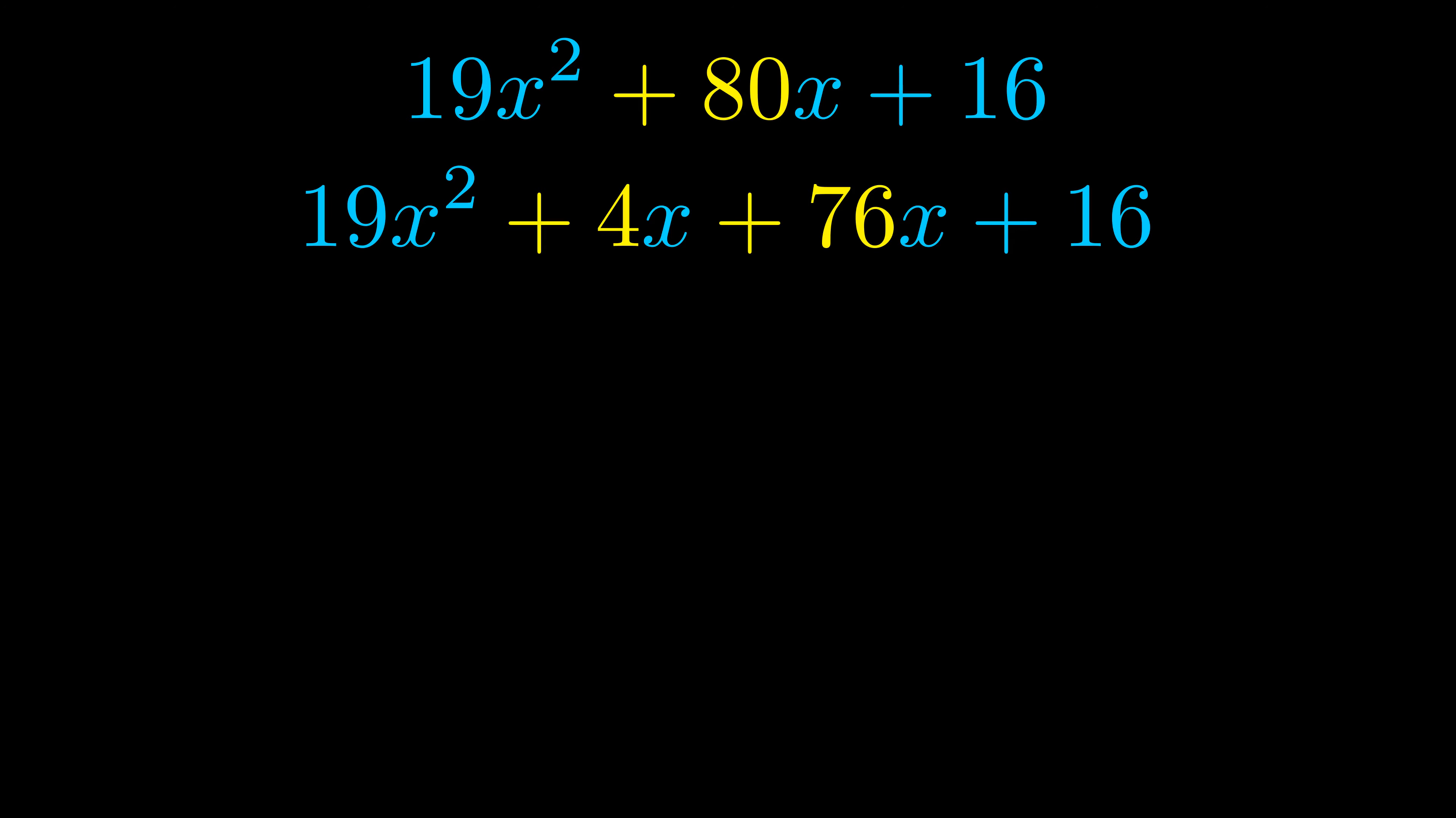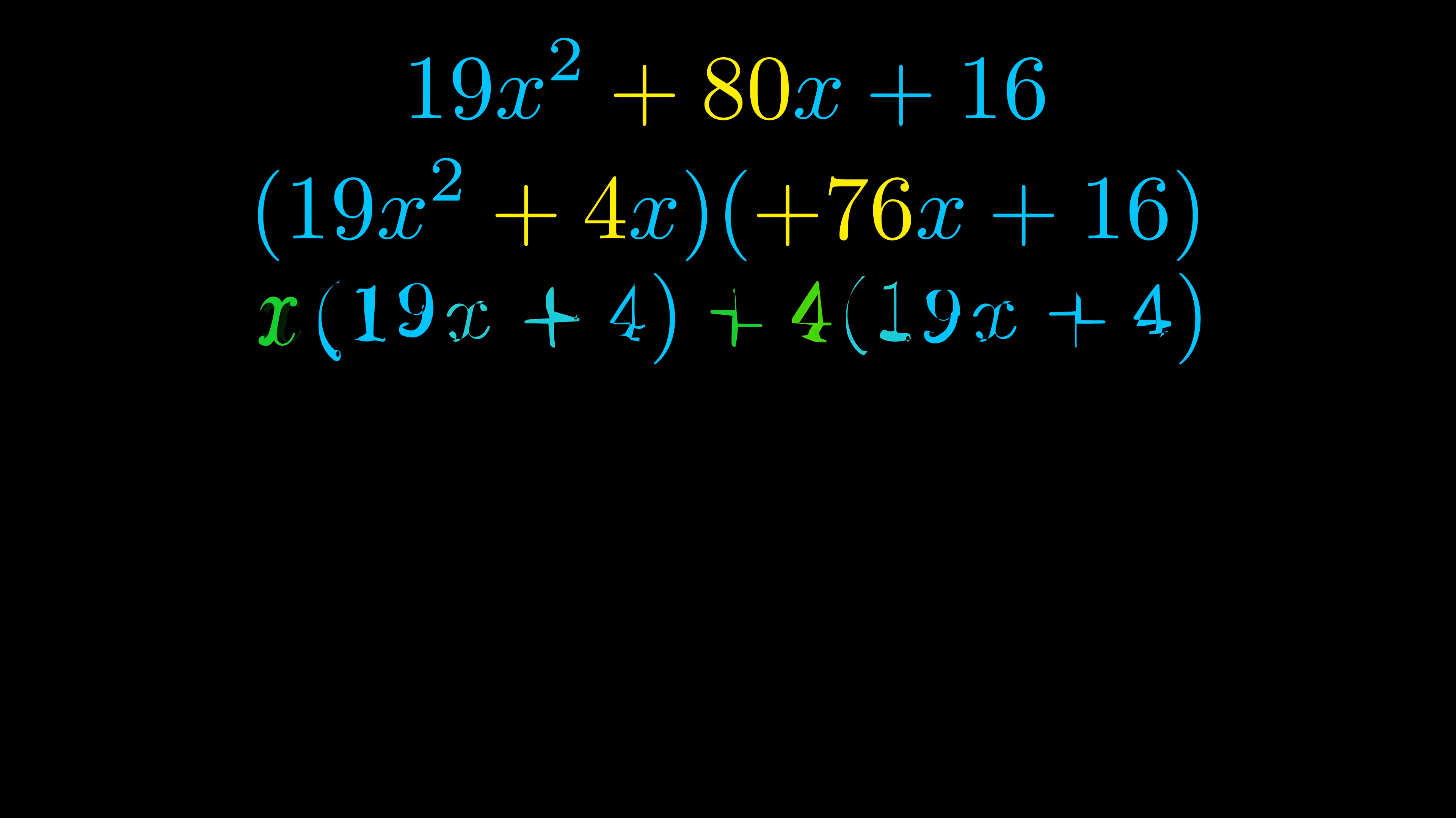Once we've done this we go ahead and we put parentheses around the first term and the last term and we do that so that we can take the greatest common factor out of both terms. We can see the greatest common factor is now outside in green.